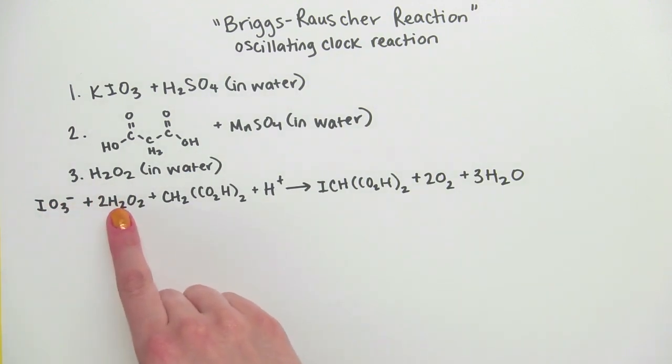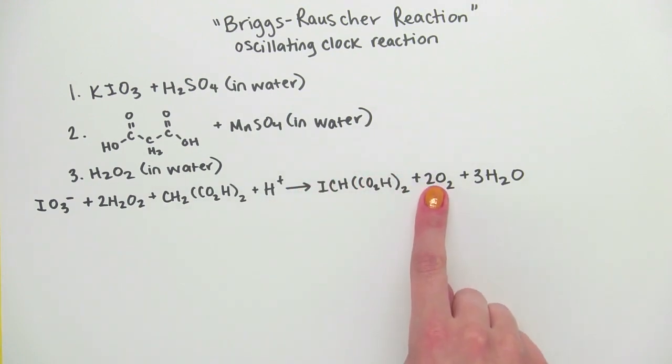So iodate, hydrogen peroxide, malonic acid, in the presence of sulfuric acid, reacts to produce this compound, oxygen and water.